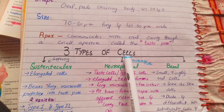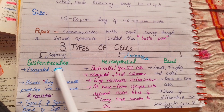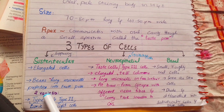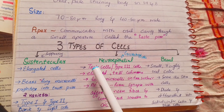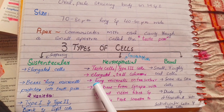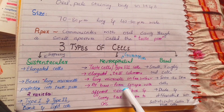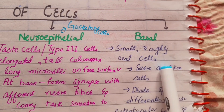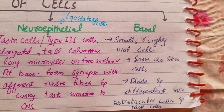There are three types of cells in taste buds: sustentacular cells, neuroepithelial cells, and basal cells. Sustentacular cells, also called supporting cells, are elongated cells bearing long microvilli projecting into the taste bud, and exist as two varieties: type 1 (dark) and type 2 (light). Neuroepithelial cells, also called gustatory cells or type 3 cells, are elongated, tall, columnar cells with long microvilli on their free surface; at their base they form synapses with afferent nerve fibers and convey taste sensation to the central nervous system. Basal cells are small, roughly oval, and serve as stem cells, dividing and differentiating into sustentacular and taste cells.